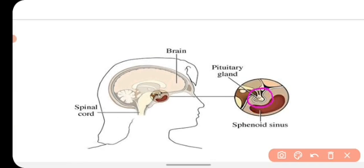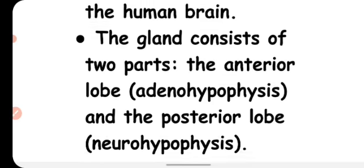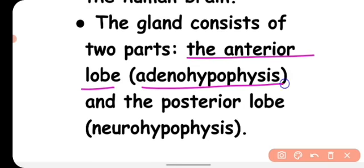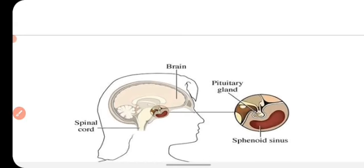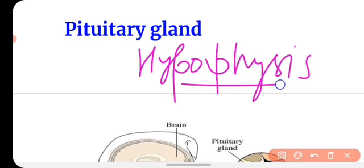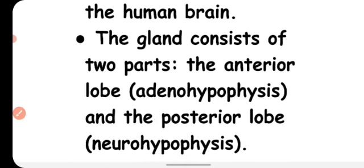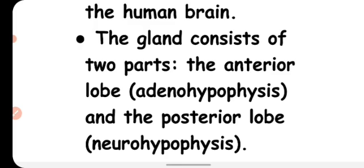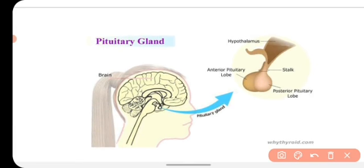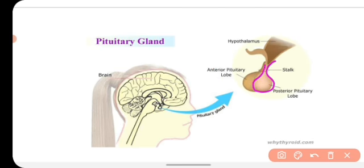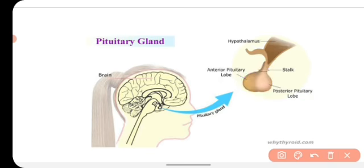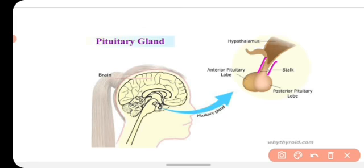The pituitary gland consists of two parts: the anterior lobe, called the adenohypophysis, and the posterior lobe, called the neurohypophysis. The pituitary gland is also known as the hypophysis. In diagrams, the posterior lobe is the neurohypophysis and the anterior lobe is the adenohypophysis. The pituitary gland is connected with the hypothalamus.